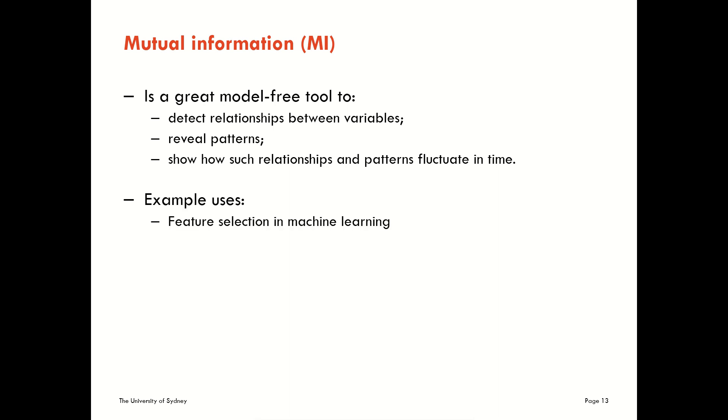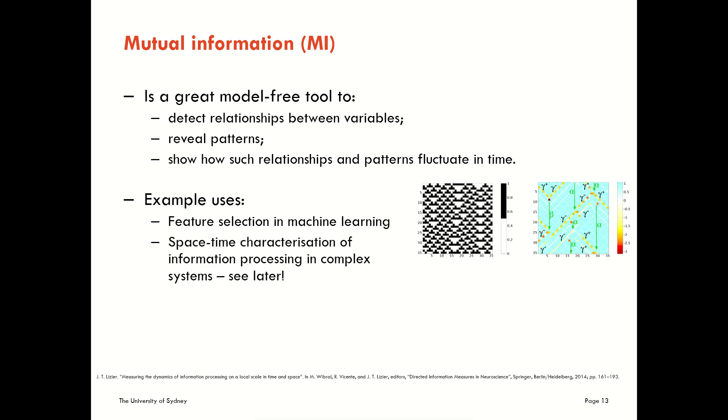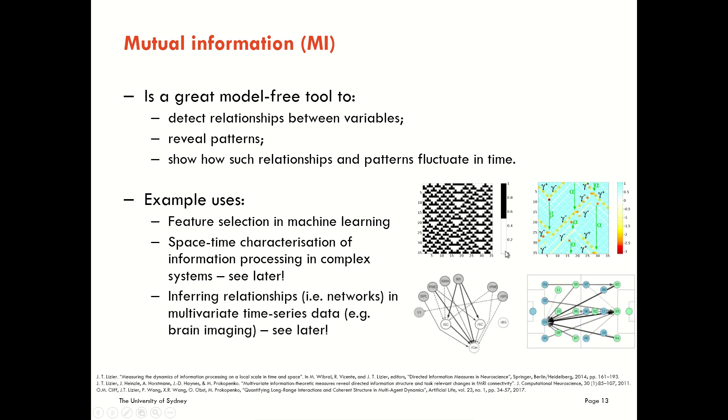We could use it for feature selection in machine learning. We could use it for space-time characterization of information processing in complex systems, for example, in cellular automata here, and this is an example we'll look at later in the course. We could use it for inferring relationships, which is networks in multivariate time series data, such as brain imaging data, which is the image we have on the left here, or between robotic soccer players, which is what we've got on the right. Again, this is something we'll look at further in our course later on.